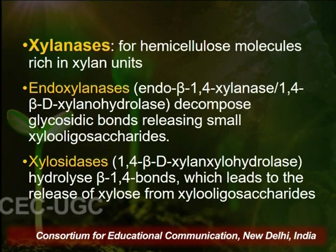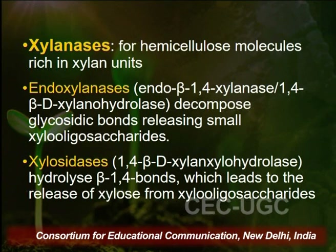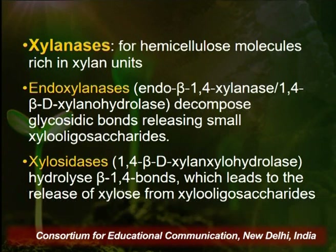Xylanases are of two types: endoxylanases and xylosidases. Endoxylanases hydrolyze the 1,4 beta linkage of the polysaccharide, releasing small xylo-oligosaccharides. These xylo-oligosaccharides are further acted upon by xylosidases, which break them down to release the monomeric unit xylose. This is how xylanases act on hemicellulosic units.